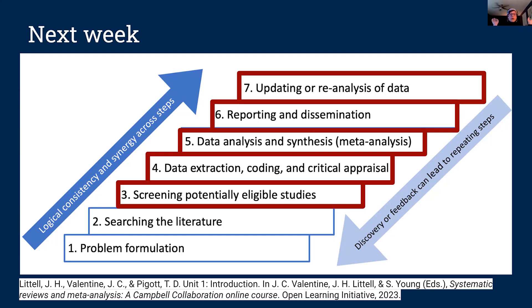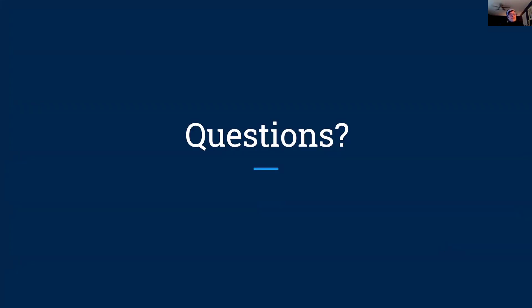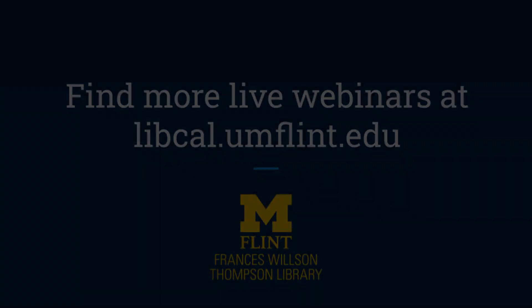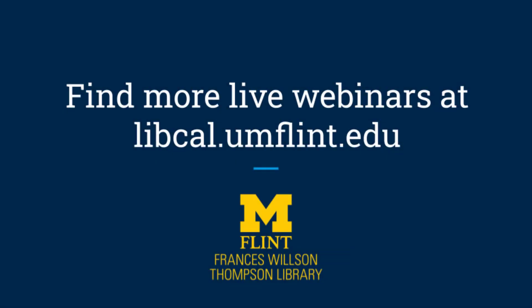That was a whirlwind presentation on searching literature and PRISMA. On October 27th, we have even more to go — steps three through seven, the rest of the process, is essentially what we will talk about. That is the end of the presentation for today. If there are any questions, we can take those now. Thank you for watching this recorded webinar. Find upcoming webinars to register for at libcal.umflint.edu.